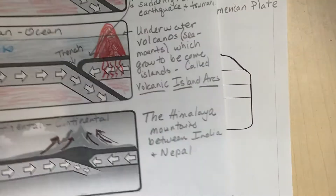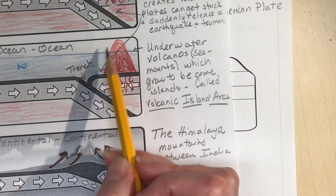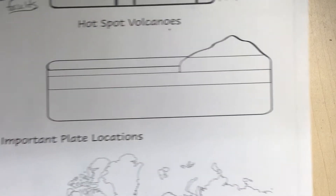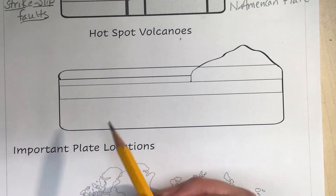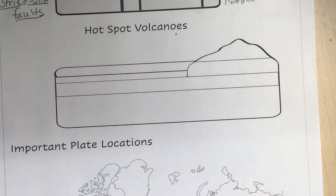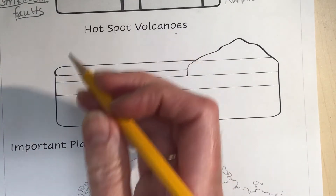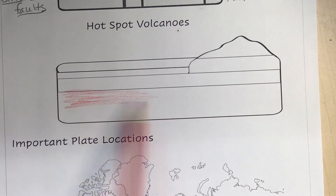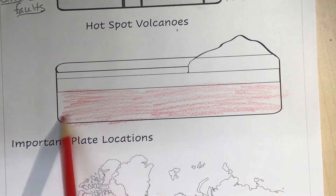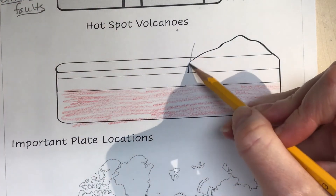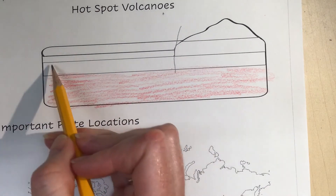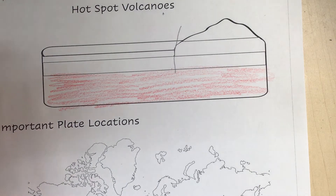The second type of volcano we have is volcanic island arcs in the ocean. But sometimes you can have an island chain in the ocean created from a hot spot — the Hawaiian Islands are an example of this. Let's draw it out. We have the magma here, and this is in the middle of a plate, away from the plate boundary. Sometimes there's a crack in the crust in the middle of the plate.